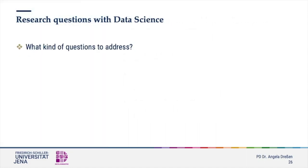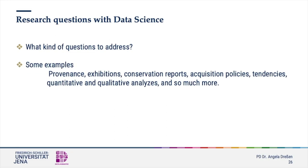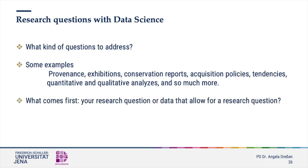You may have recognized that art history research based on data offers other possibilities than traditional methods. It comes as a very useful addition, especially if you are interested in questions on provenance, exhibitions, conservation reports, acquisition policies, tendencies, quantitative and qualitative analysis, and so on. It ultimately depends on your interest and research topics. There are many ways how you could add data science to a traditional topic and search sideways for other insights into a topic you are dealing with in a hermeneutical approach.